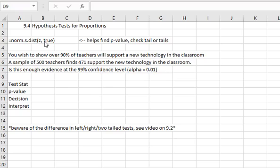This video is going to only look at one example. We want to show that over 90% of teachers will support a new technology in the classroom. Because I want to show over, that means I want to show that it's greater than. So we could put a null hypothesis that p, because it's a proportion, is equal to 0.90. And for our alternative hypothesis, we're trying to show that that proportion is greater than 0.90.